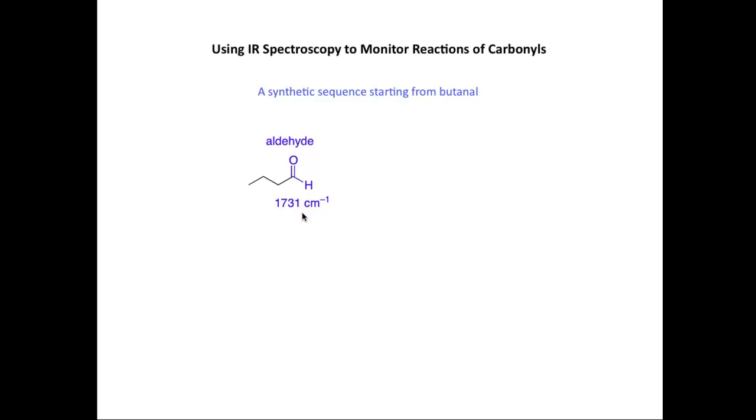We're going to transform this into a carboxylic acid. So we're going to oxidize the aldehyde to the carboxylic acid using potassium permanganate. In the infrared spectrum, we would expect to see the strong, intense CO stretching vibration shift from 1731 to 1712. So the absorption band is lower in the spectrum.